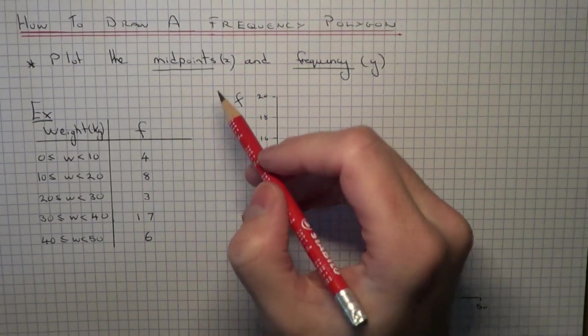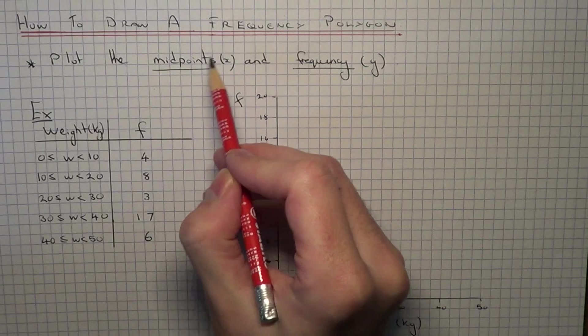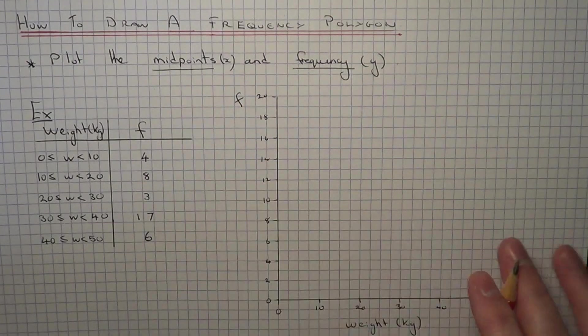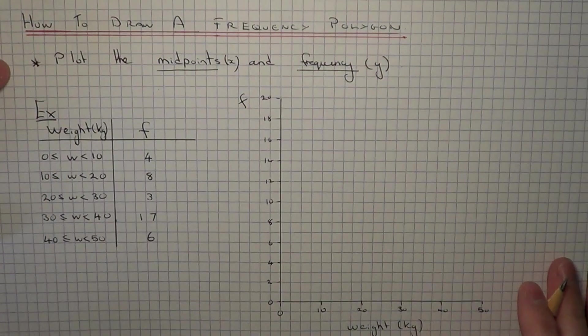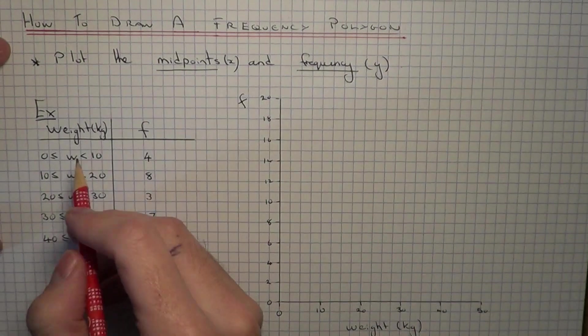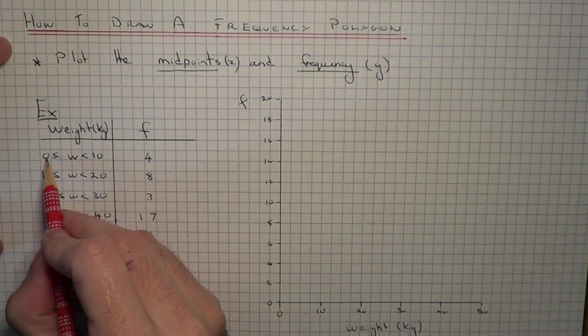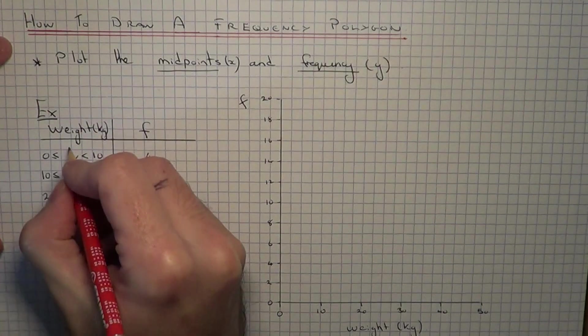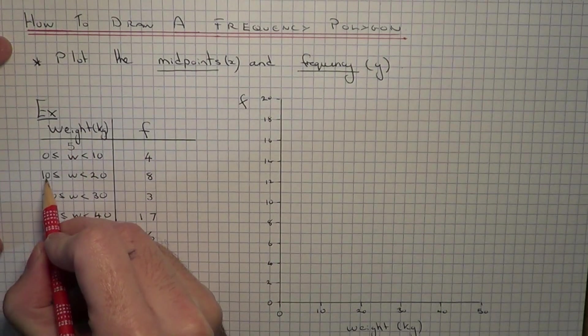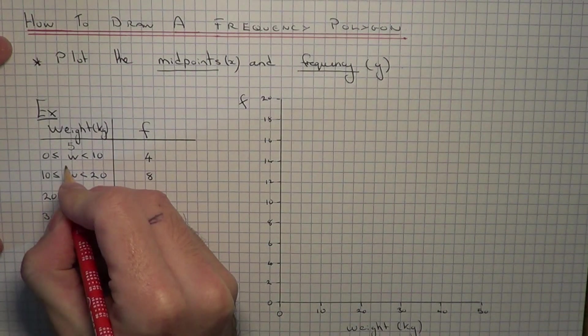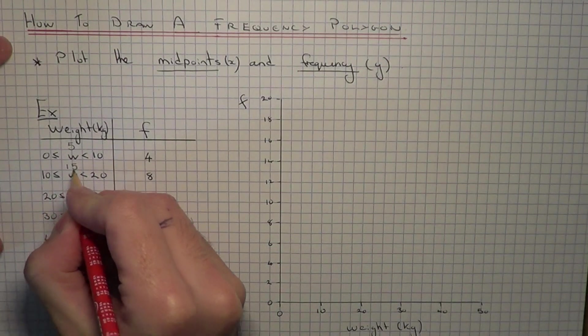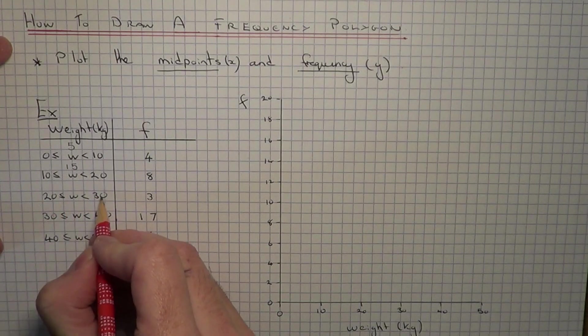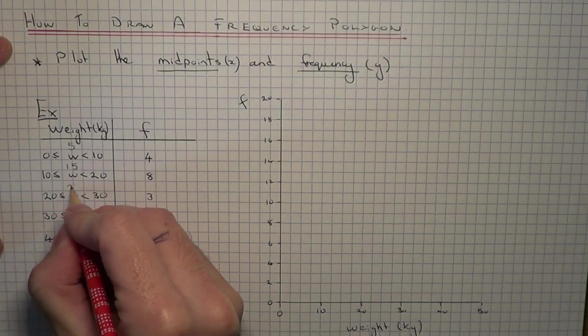So the first thing we have to do is work out the midpoints of each group. The midpoint is the number halfway between the lower limit and the upper limit. So halfway between 0 and 10 would be 5. Halfway between 10 and 20 would be 15. Halfway between 20 and 30 would be 25.